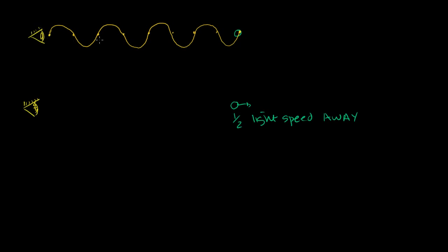As the waveforms keep going past my eye, my eye will perceive some type of wavelength or frequency and perceive it to be some type of color, assuming that we're in the visible part of the electromagnetic spectrum.